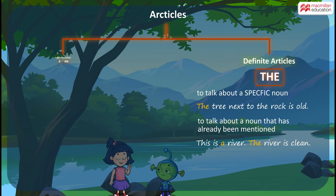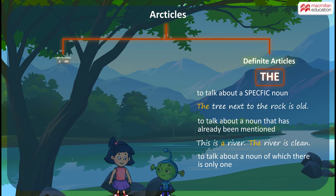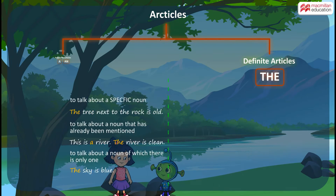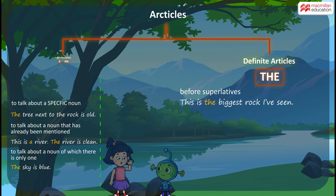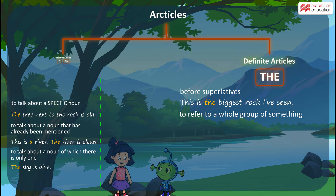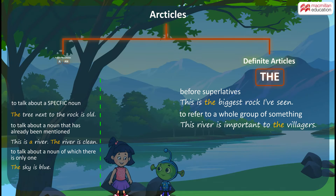We use the when we talk about a noun of which there is only one. For example, the sky is blue. We use the before superlatives. For example, this is the biggest rock I have seen. We also use the to refer to a whole group of something. For example, this river is important to the villagers.